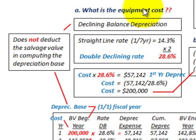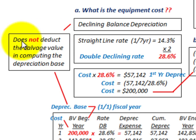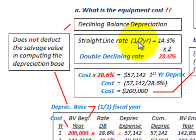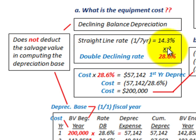So what is the equipment cost? We can determine that using the declining balance depreciation method. The key point is that with the declining balance method, it does not deduct the salvage value in computing the depreciation base for the first year. With the straight-line method we had one-seventh per year, or 14.3% per year. For a double declining rate it would be two times that — 28.6% — a 200% declining rate.